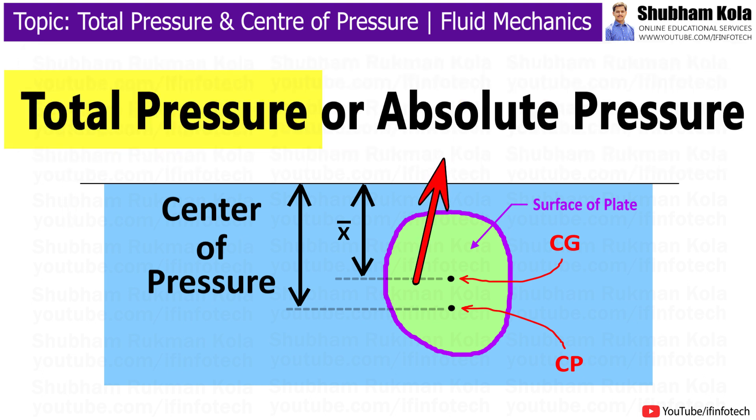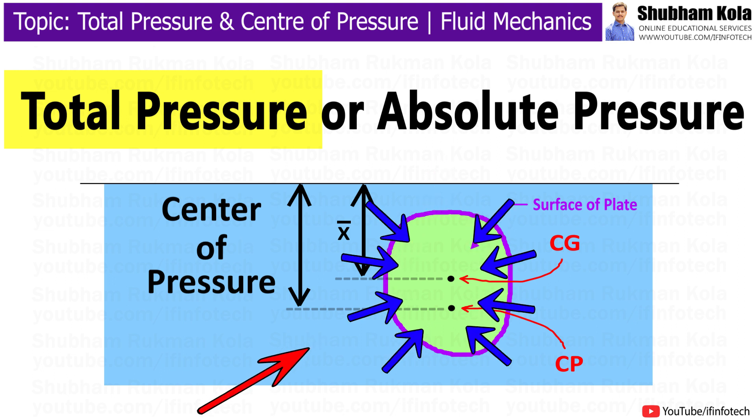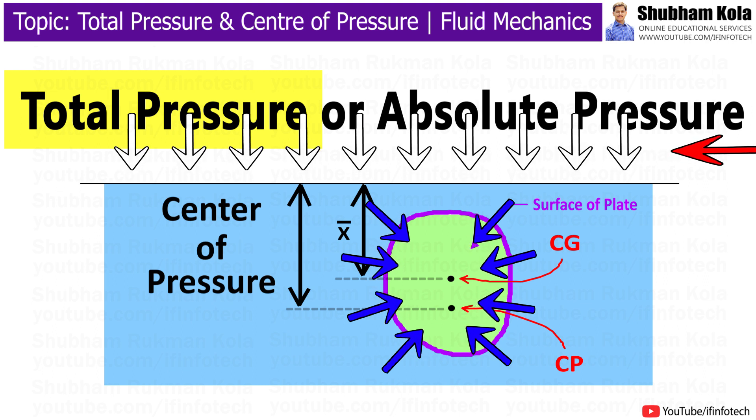Total pressure, also known as absolute pressure, is the sum of all the pressures in a fluid at a given point, including atmospheric pressure.